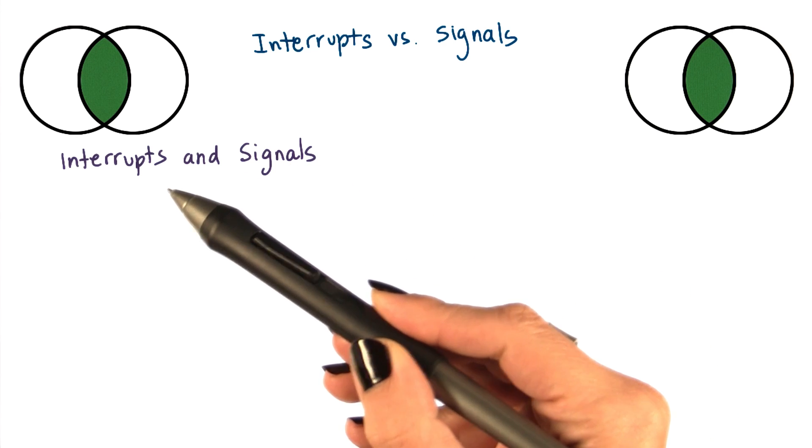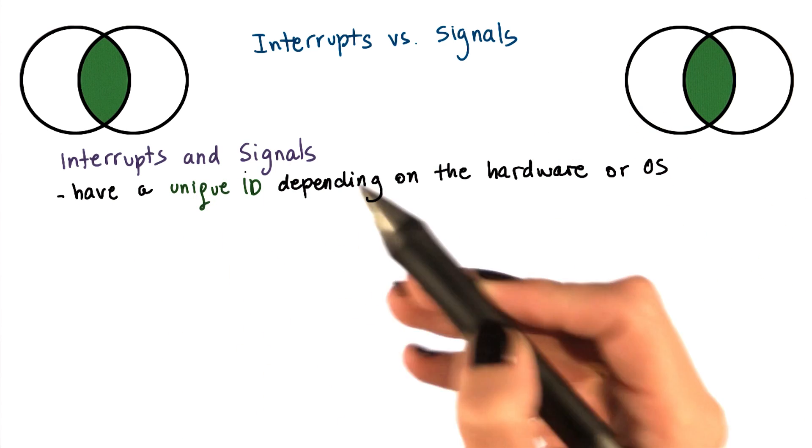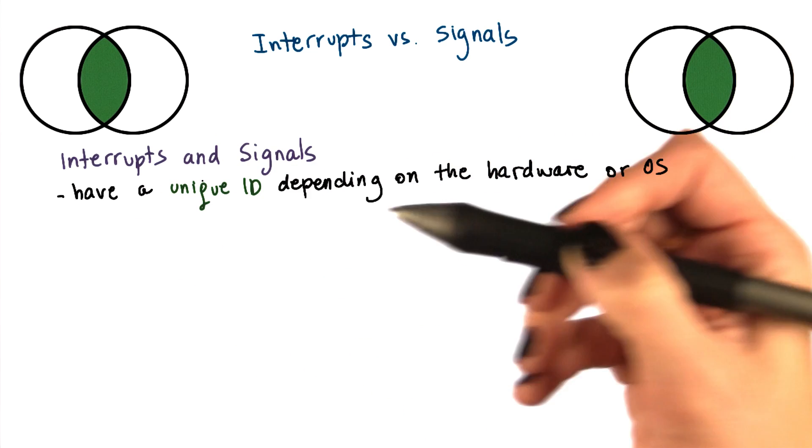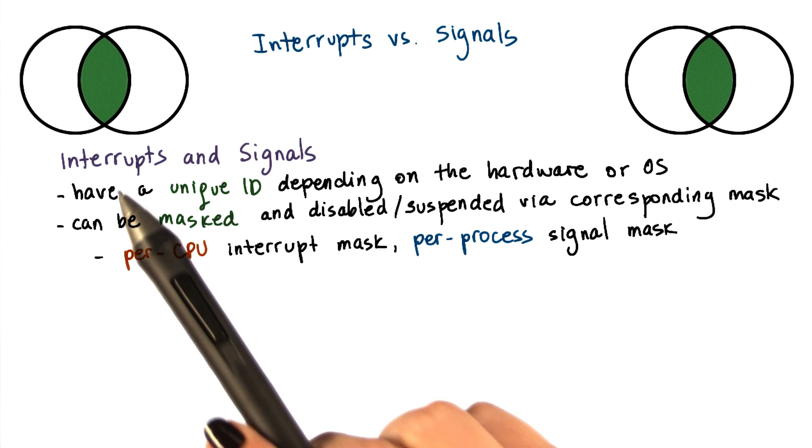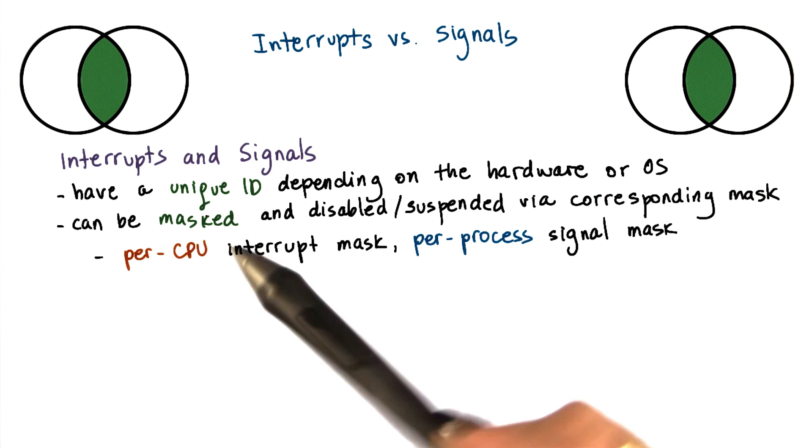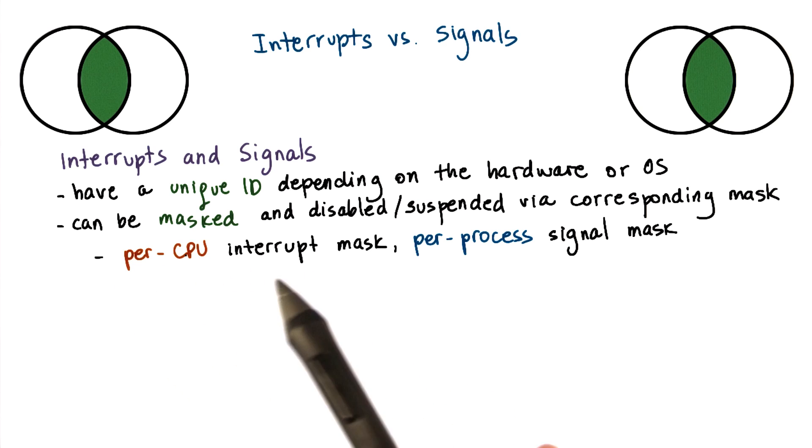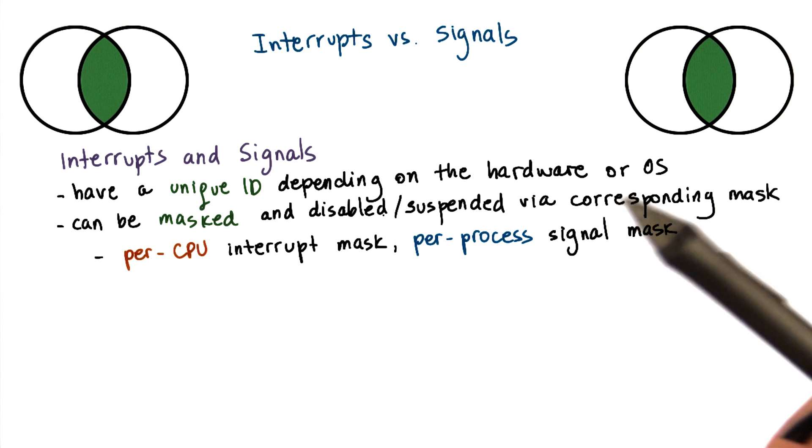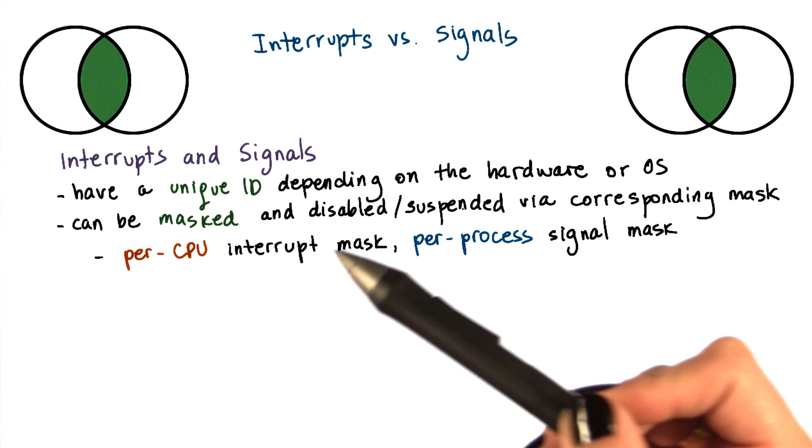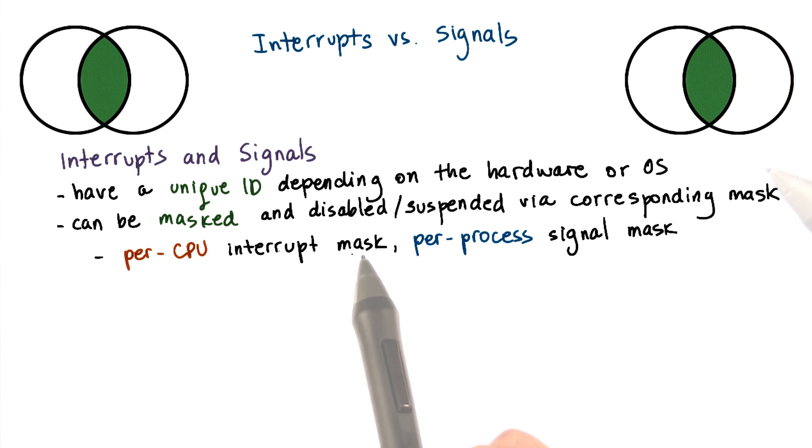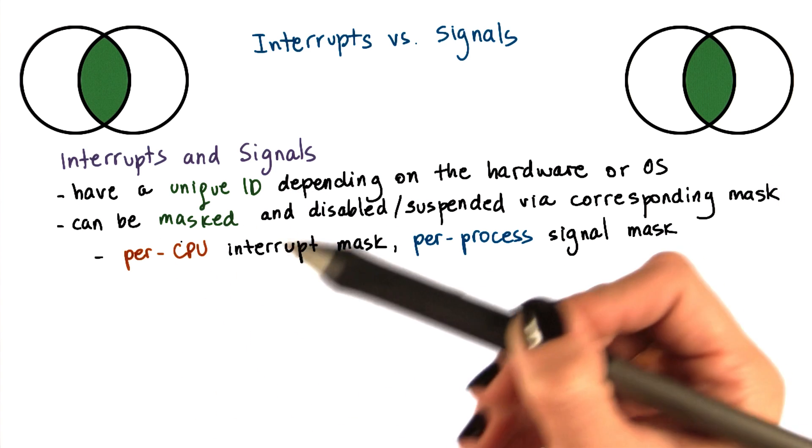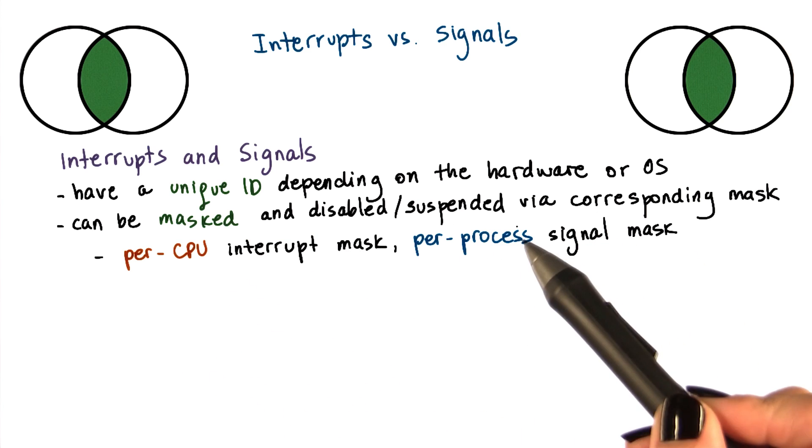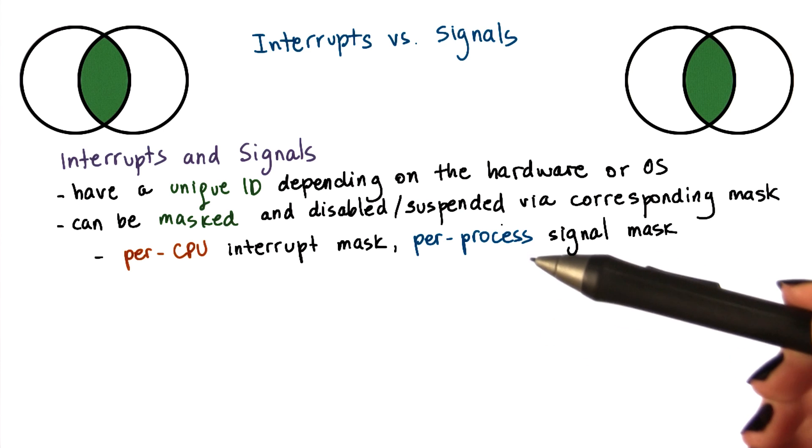There are some aspects of interrupts and signals that are similar. Both interrupts and signals have a unique identifier, and its value will depend either on the hardware in the case of interrupts or on the operating system in the case of signals. Both interrupts and signals can be masked. For this, we use either a per-CPU mask for the interrupts or a per-process mask for the signals to disable or to suspend the notification that an interrupt or a signal is delivering. The interrupt mask is associated with a CPU because interrupts are delivered to the CPU as a whole, whereas the signal mask is associated with a process because signals are delivered to individual processes.